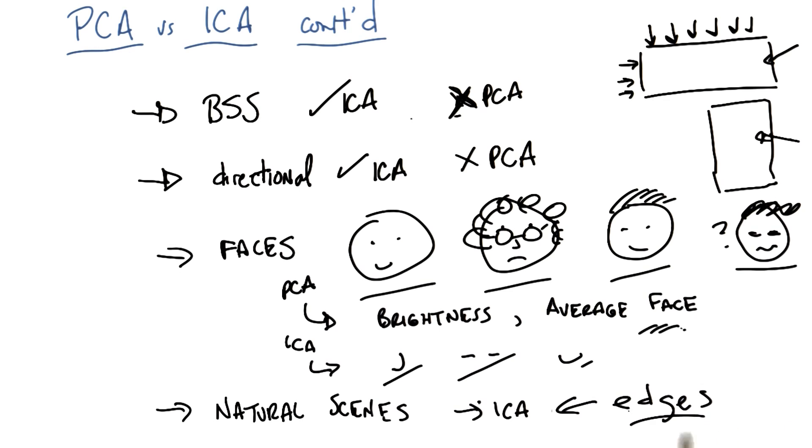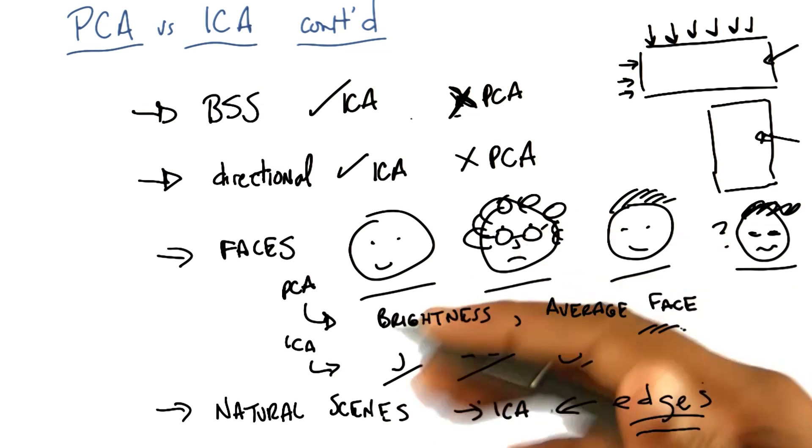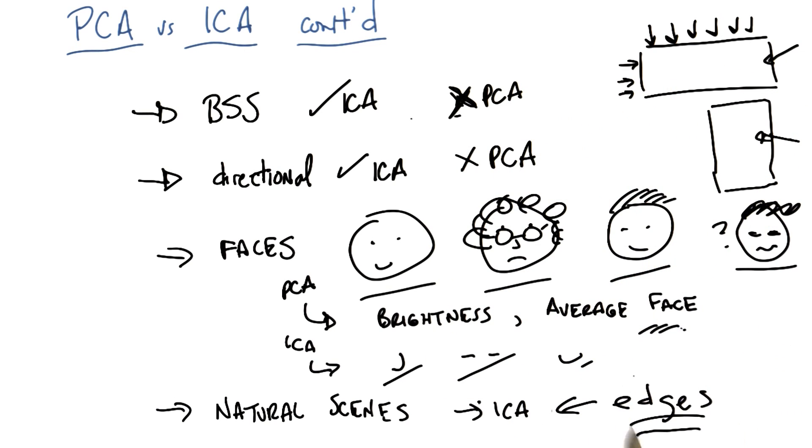Now for me that is incredibly satisfying. It says that the independent components of the world are edges. Now there are two things that come out of this. One, it's just the satisfying feeling you get by realizing that there's an algorithm that on its own recovers something fundamental like edges. That's very nice. But the second thing that's nice about it is once I use ICA to do my feature transformation and discover that what it's learning are edge detectors, well then I can just write edge detectors. I can just write algorithms that are very fast, very efficient, that can go through images of natural scenes and pull out the edges.